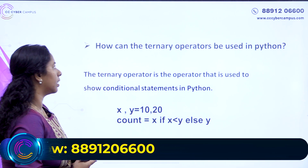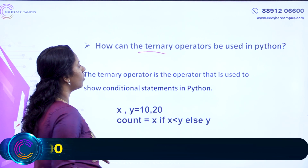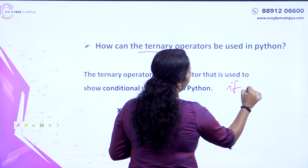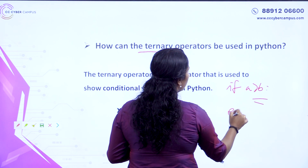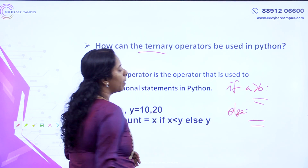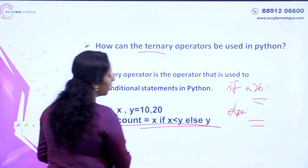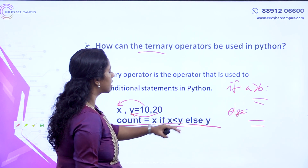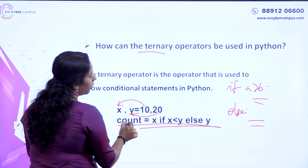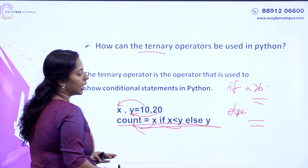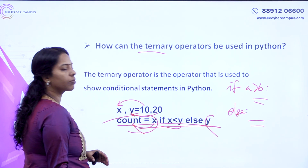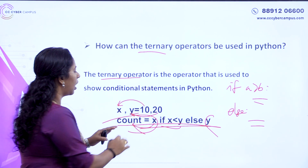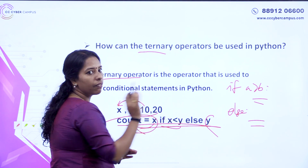Can ternary operators be used in Python? What is the ternary operator? It is an operator used to show conditional statements in Python. How do we use an if statement? If condition: true part, else false part. We use the ternary operator like this: count = x if x < y else y. So if x is less than y, count equals x, otherwise count equals y. It is a simple, concise statement.